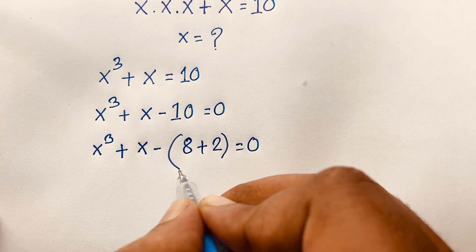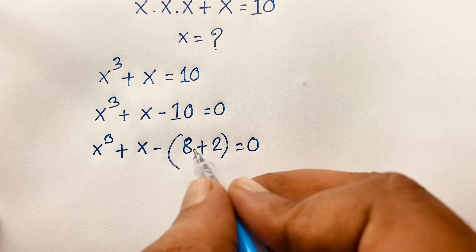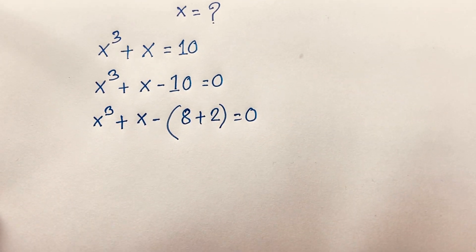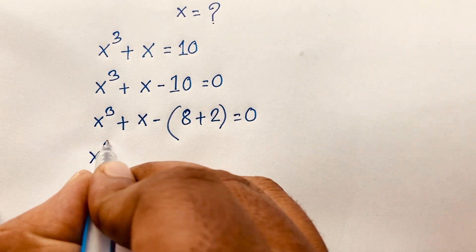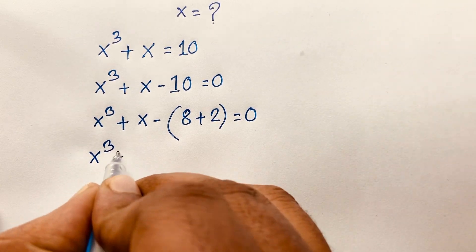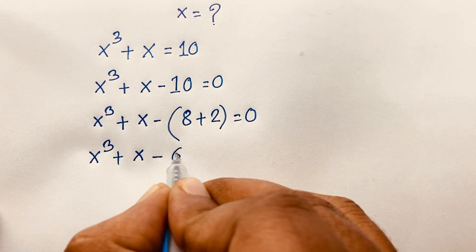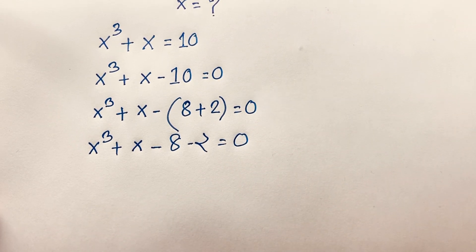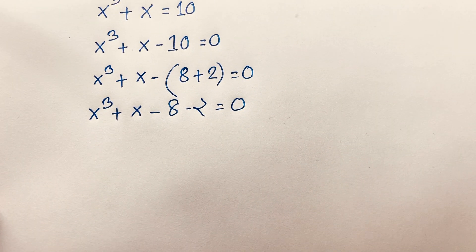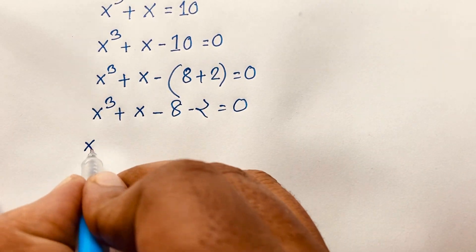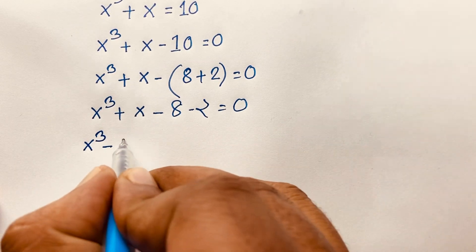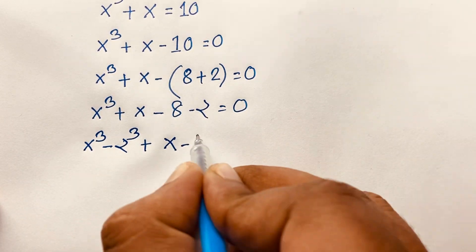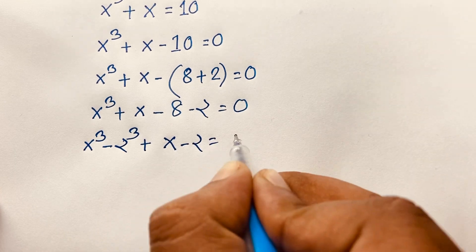Here, 8 is a cube number — 2 to the power 3 equals 8. So I can rewrite: x to the power 3 minus 8, plus x minus 2, is equal to 0.